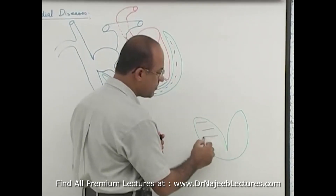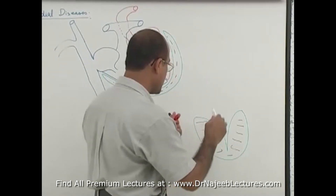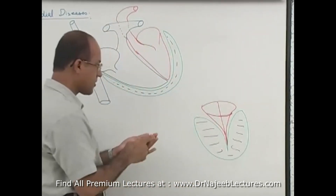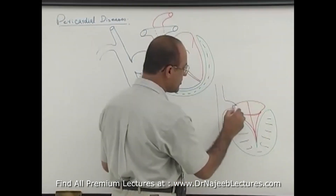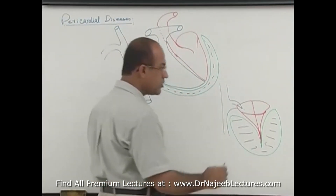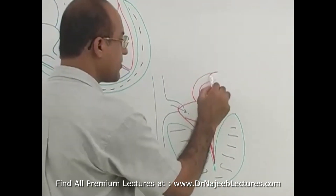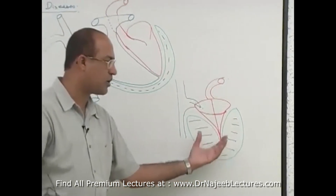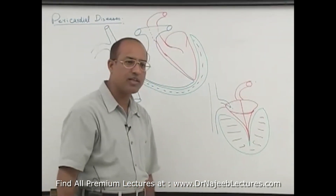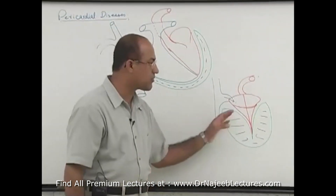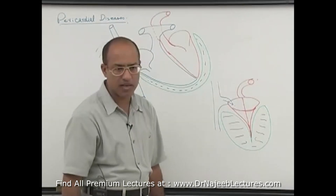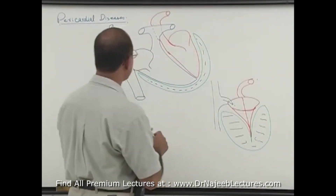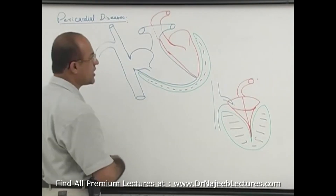Under these circumstances, the heart is compressed, especially the ventricles. Major venous input cannot come to the heart and major output from the heart cannot be maintained, because there is rapid accumulation of large amount of fluid compressing the ventricles and atria during diastole. So diastolic filling of both ventricles is compromised, and this person will have progressively rising JVP.